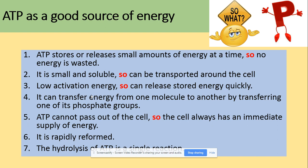ATP can transfer energy from one molecule to another by transferring one of its phosphate groups — this is phosphorylation. For example, in the glycolysis reaction, you need to phosphorylate glucose to make it more reactive. ATP cannot pass out of cells, so it can be transported within the cell but not out of it, meaning the cell always has an immediate supply of energy. It is rapidly reformed, and hydrolysis of ATP is only a single reaction.